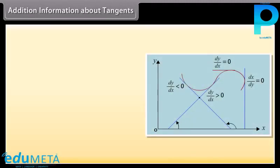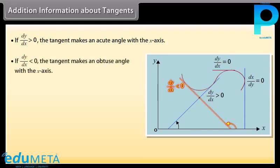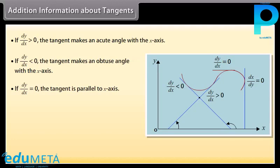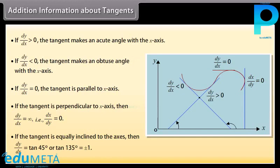Additional information about tangents: If dY/dX > 0, the tangent makes an acute angle with the X axis. If dY/dX < 0, the tangent makes an obtuse angle with the X axis. If dY/dX = 0, the tangent is parallel to the X axis. If the tangent is perpendicular to the X axis, then dY/dX is infinite, i.e., dX/dY = 0. If the tangent is equally inclined to the axes, then dY/dX = tan(45°) or tan(135°) = ±1.